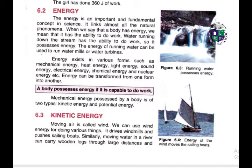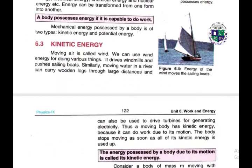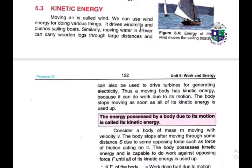Mechanical energy possessed by a body is of two types. The first is kinetic energy. Moving air is wind, and we can use wind energy for doing various things. The energy possessed by a body due to its motion is called kinetic energy. It drives windmills and pushes sailing boats. Similarly, moving water in a river can carry wooden logs over large distances and can be used to drive turbines for generating electricity. A moving body has kinetic energy because it can do work due to its motion, and the body stops moving as soon as all its kinetic energy is used.